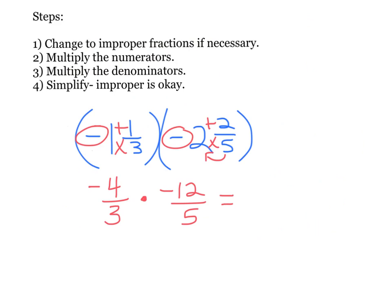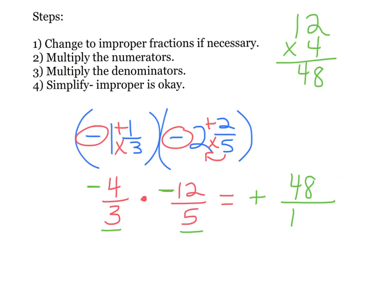My next step is to multiply straight across the top. First I'll look at the signs: I have a negative times a negative, so I know my answer is going to be positive. Now I need to do 12 times 4 — working that out gives me 48. And on the bottom, the denominators: 3 times 5 is 15.